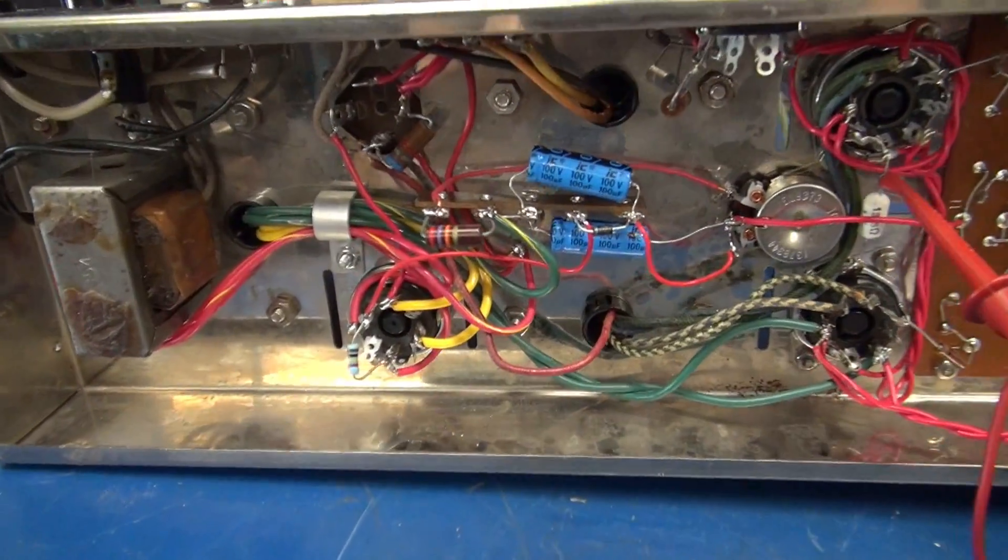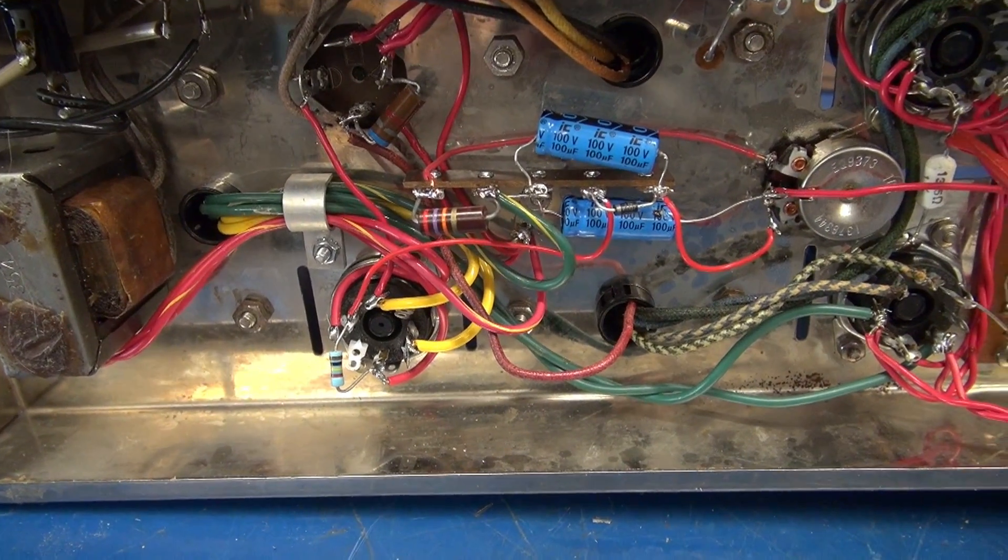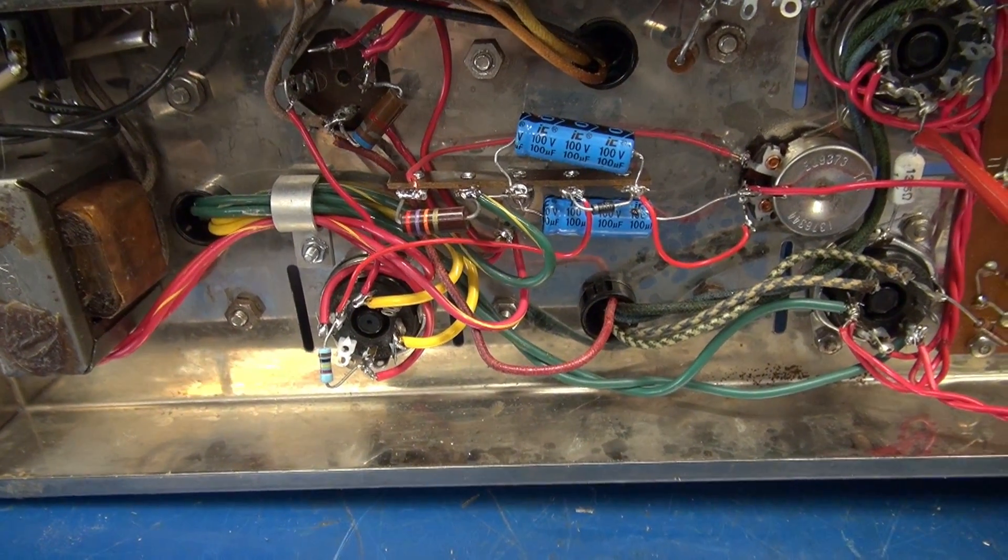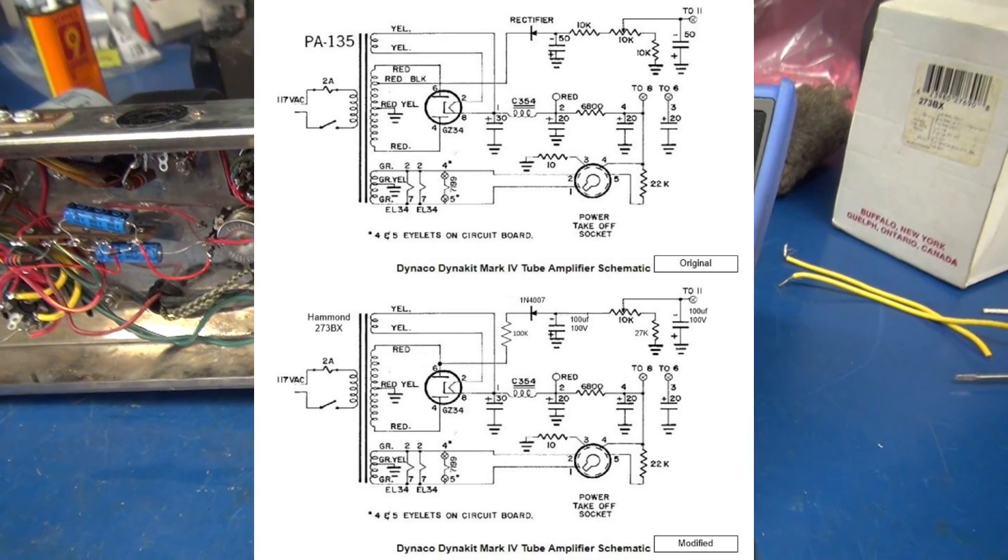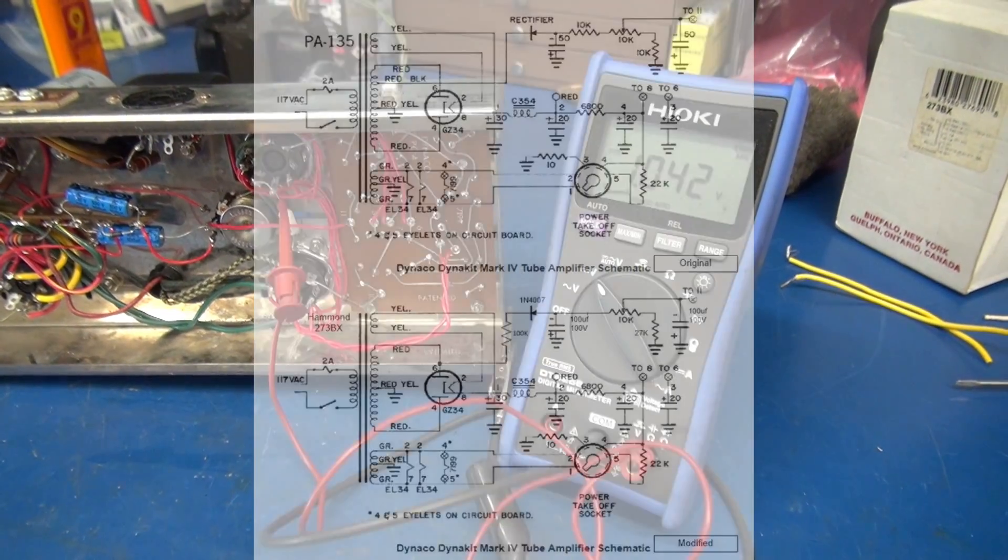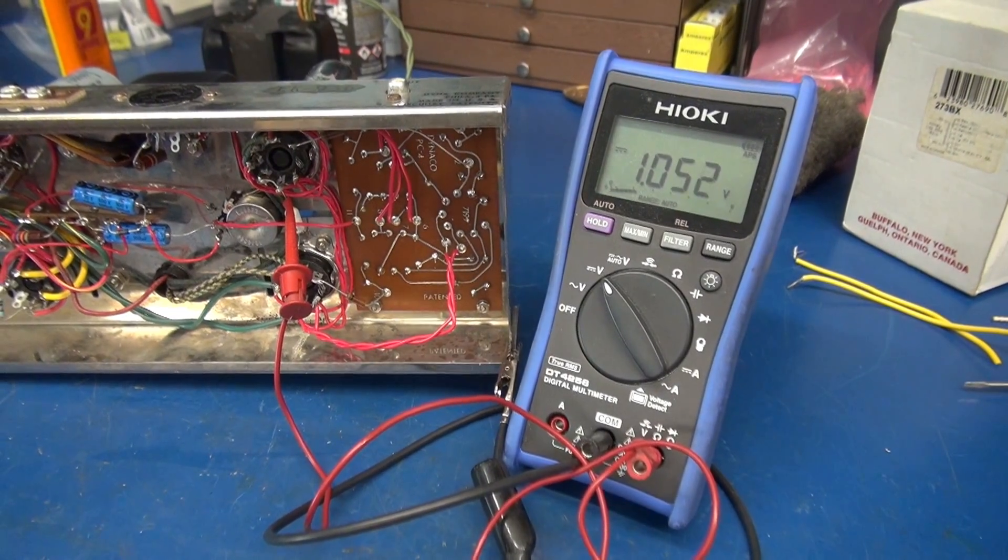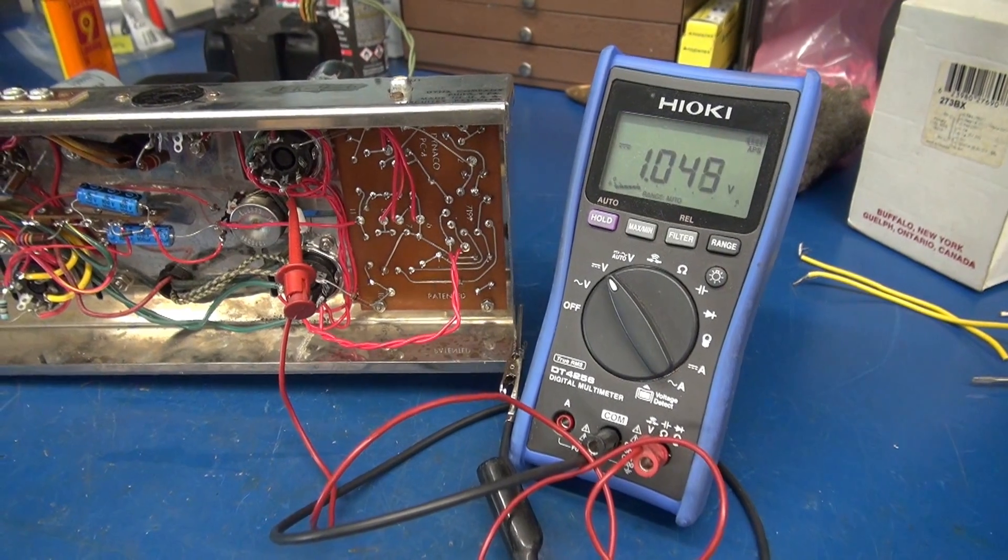All right the new bias system is installed and I will show a document of how you reconfigure it for application with a Hammond 273BX. I've got the bias set at about a volt just monitoring it for stability but everything looks great.